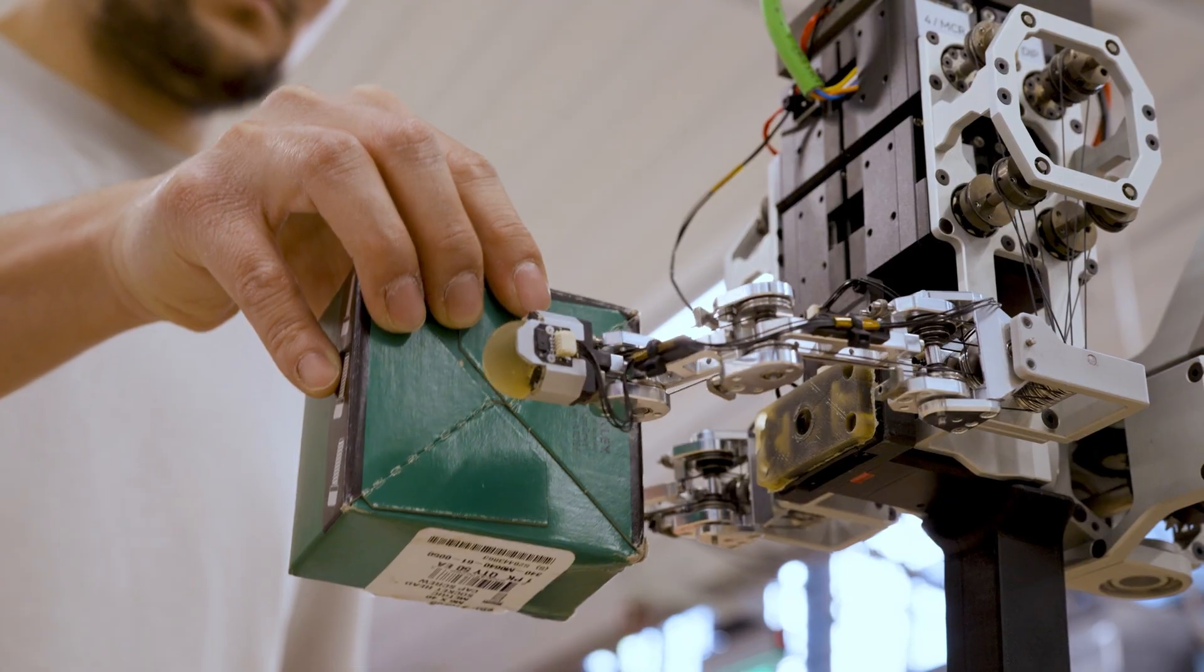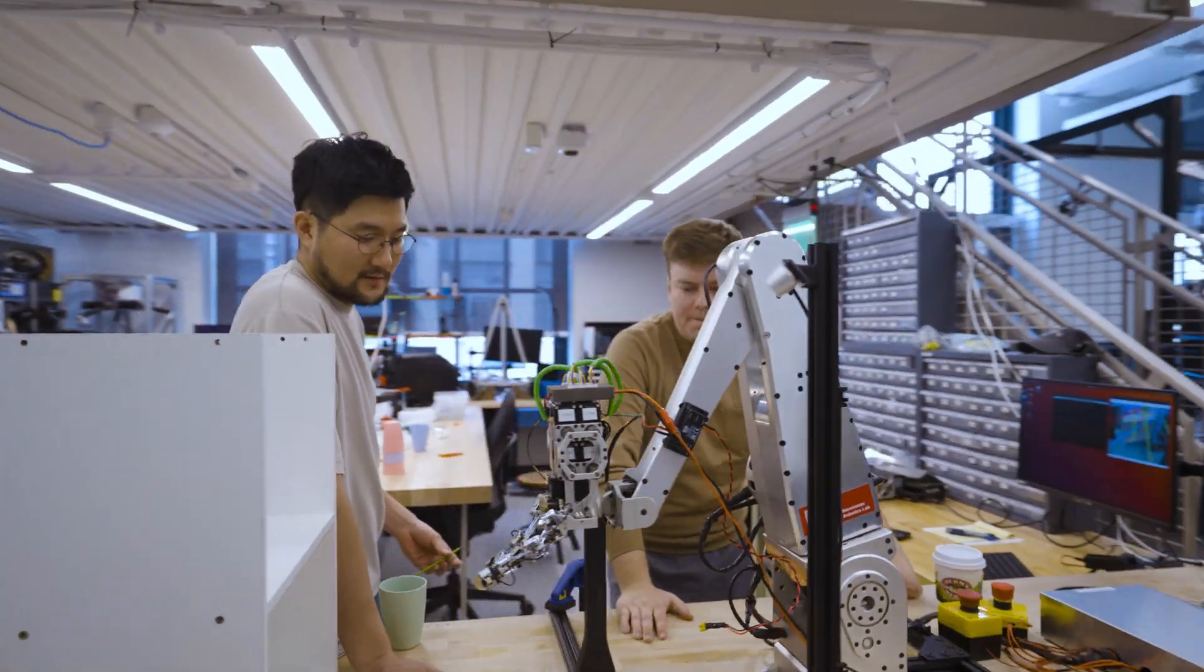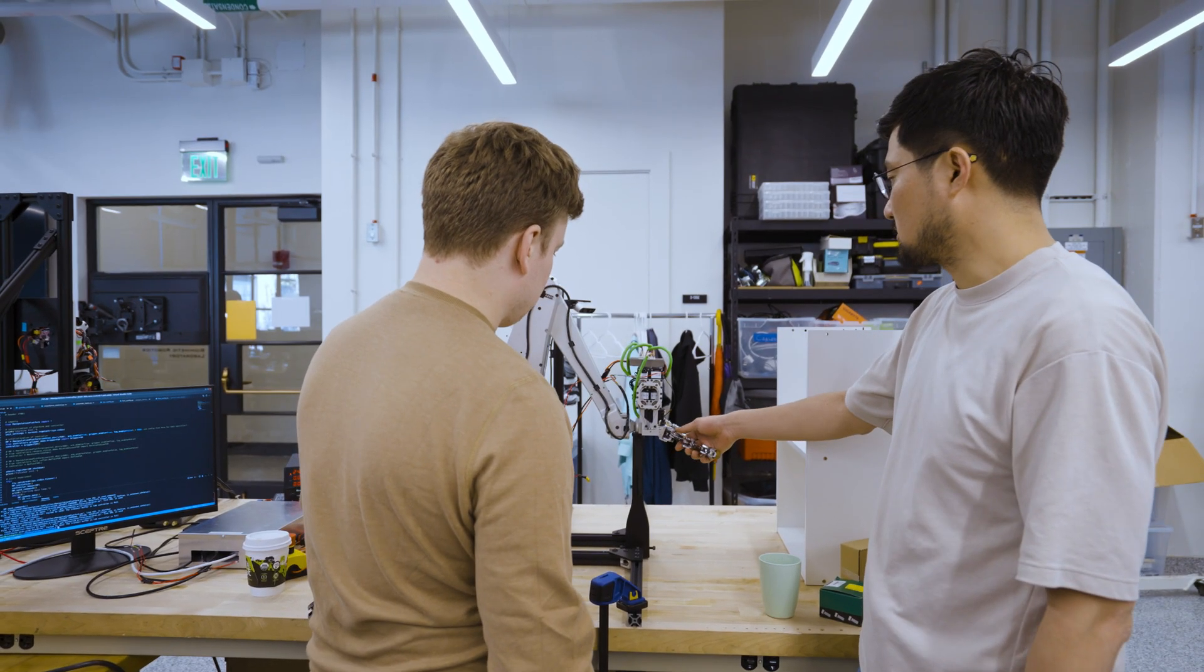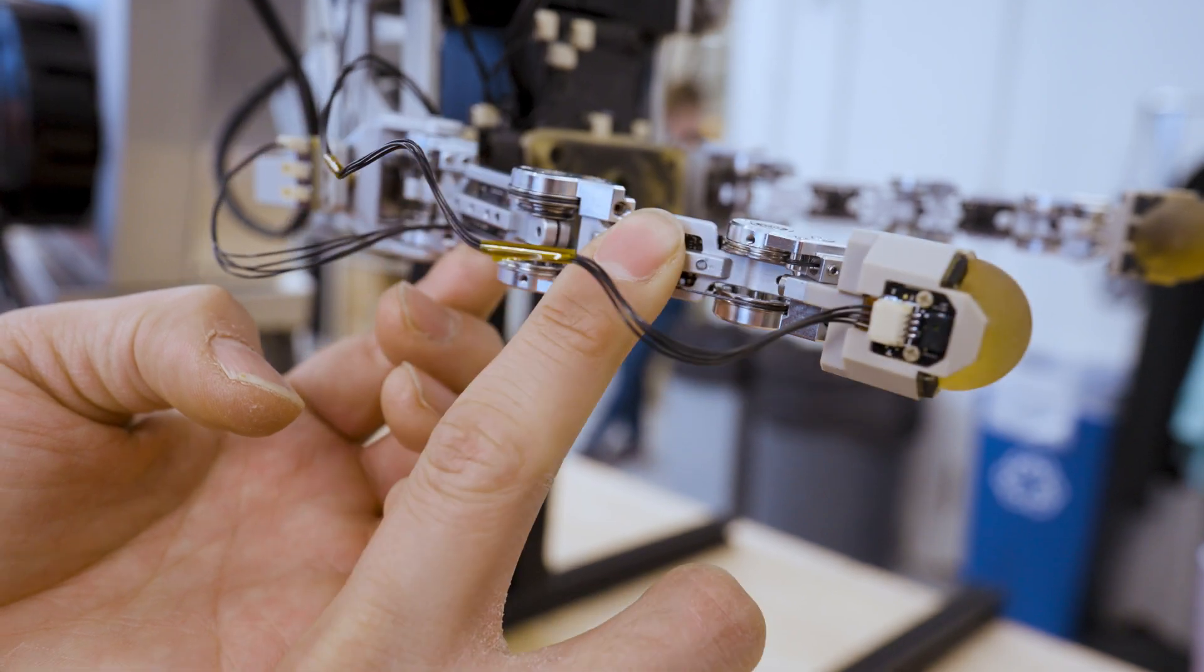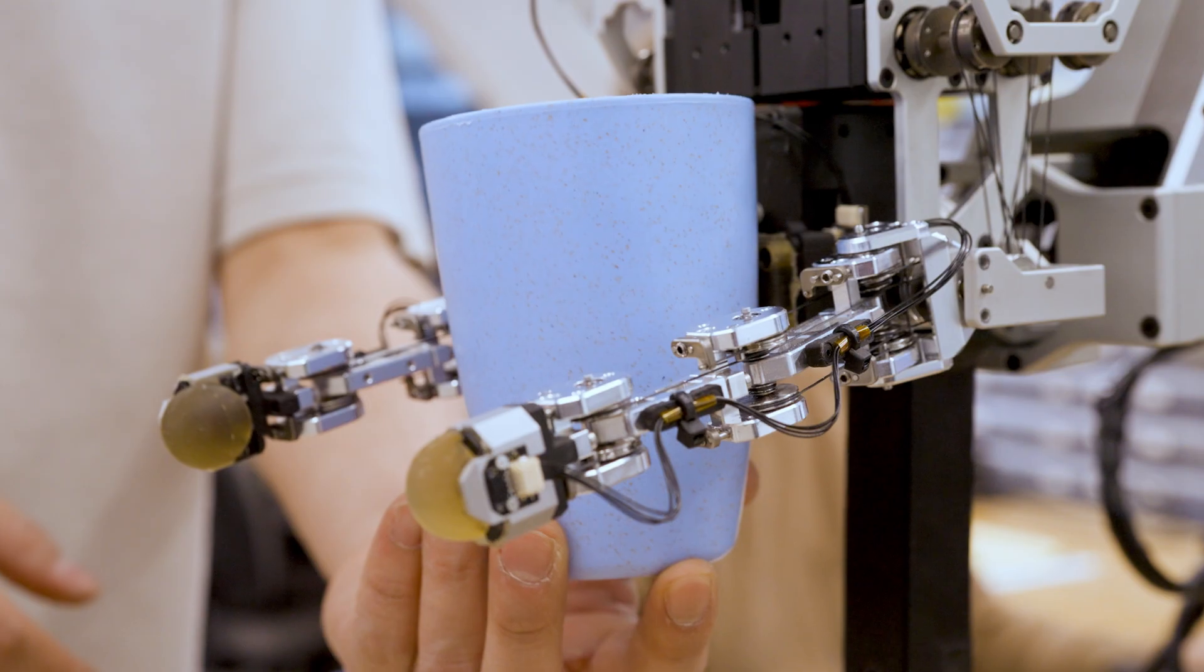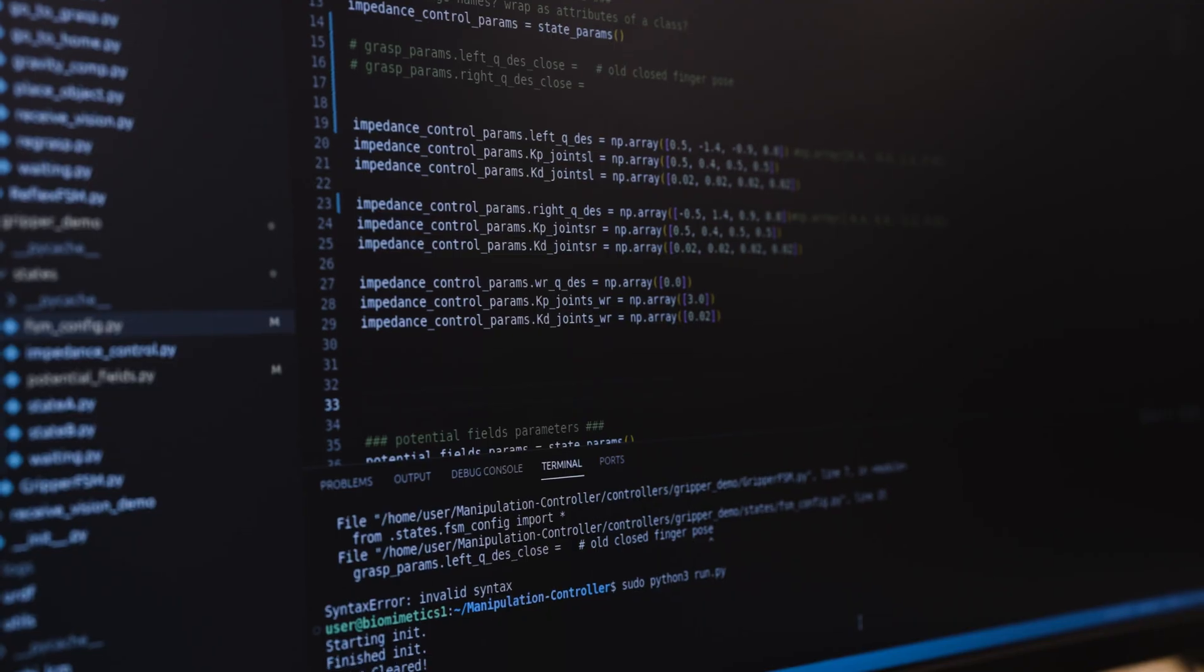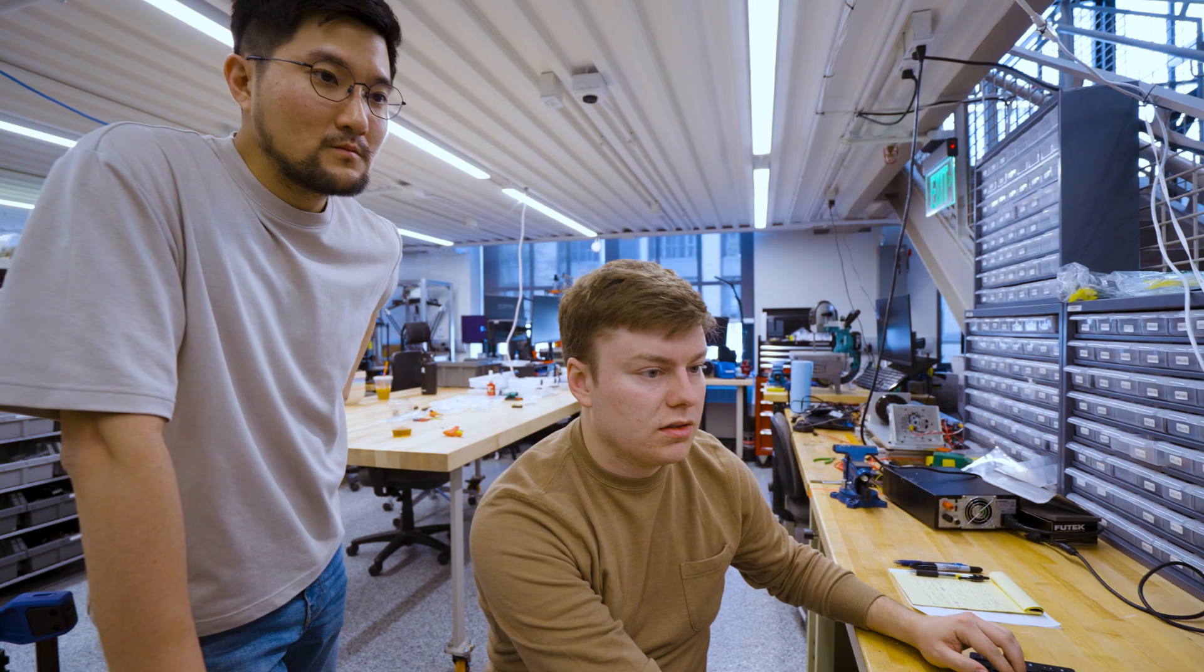A common approach in other manipulation systems is to use vision and use camera and plan all the details down to specific fingertip locations on an object. That slows down the system and you depend heavily on how quickly you can get information from your cameras.